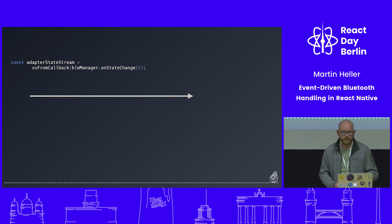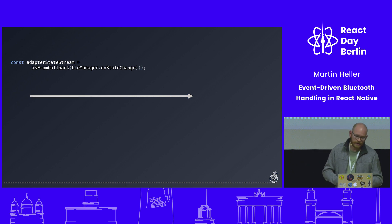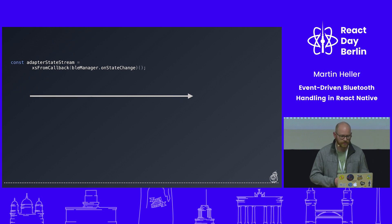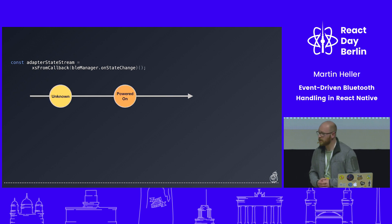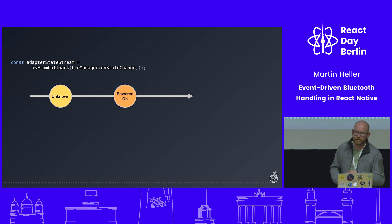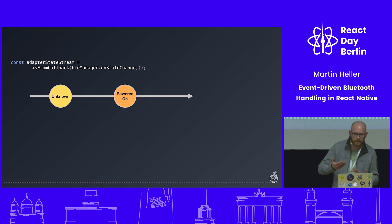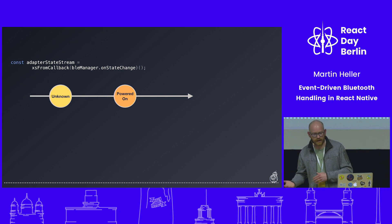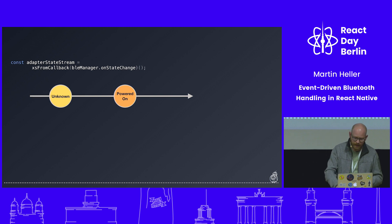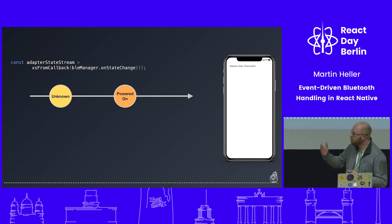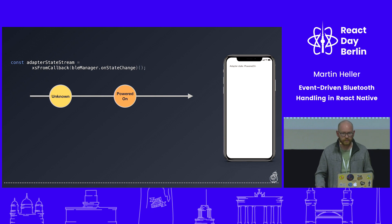We can monitor the state with a function from BLE PLX called onStateChange. And instead of providing a callback, I call a function from XStream called fromCallback. What that does is turn this function into a stream — so we get a stream that will first usually show 'unknown,' because before the library is initialized it won't know the adapter state. Once everything is done, you hopefully get 'powered on.' It's pretty useful to know the adapter state during development.